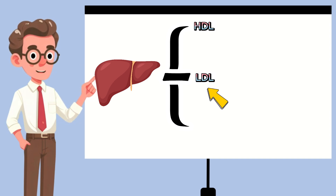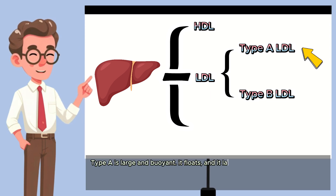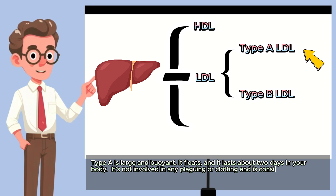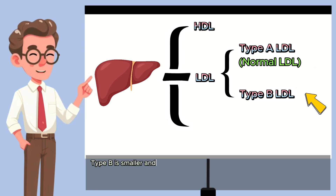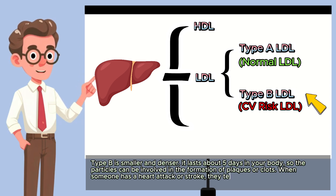Let's go deeper about LDL. There are two types of LDL, called Type A and Type B, or alternatively Pattern A and Pattern B. Type A is large and buoyant — it floats and lasts about two days in your body. It's not involved in any plaquing or clotting and is considered the more normal LDL. Type B is smaller and denser. It lasts about five days in your body, so the particles can be involved in the formation of plaques or clots. When someone has a heart attack or stroke, they tend to have more of the Type B LDL.